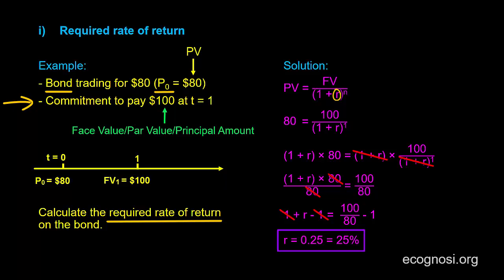We could extend the analysis and say that this bond must be an extremely risky one. As historically speaking, it is rare for a bond to have such a high required rate of return, let alone one that matures in just a year. But more on that type of analysis in the fixed income set of videos.